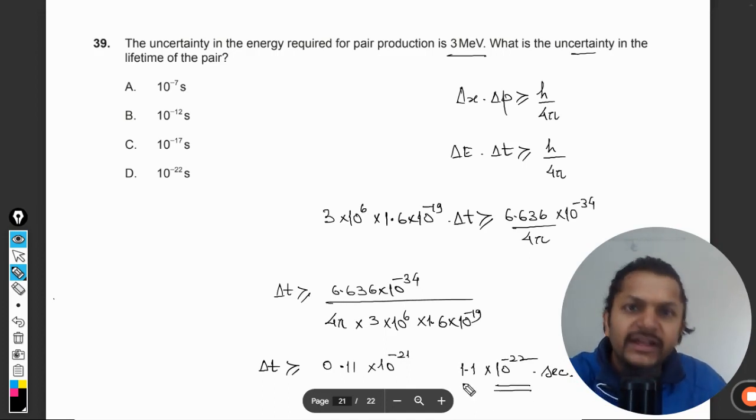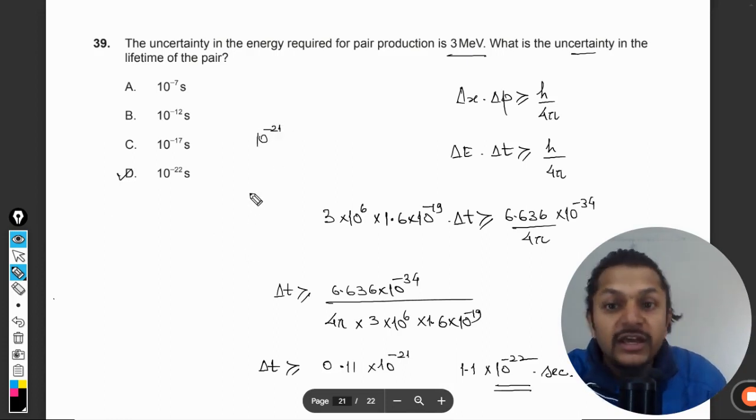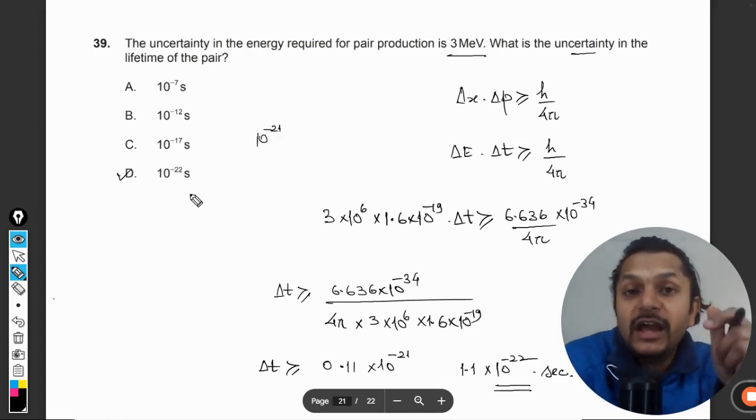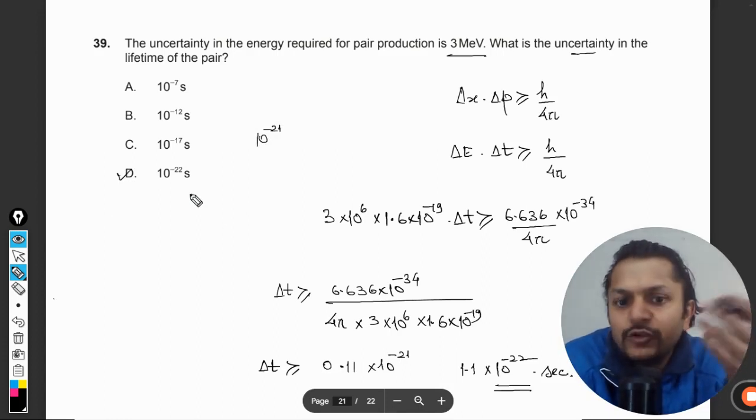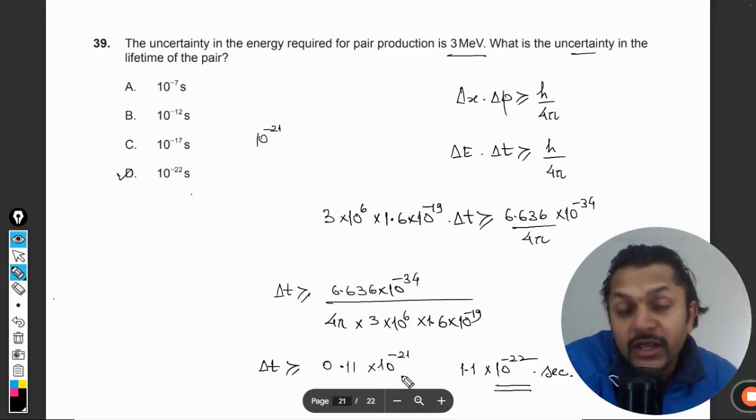Hence the answer will be D. If the option was given as 10^-21, even then the answer will be D. There is this possibility that you would be going with 10^-21 by mistake, but that will be wrong. 10^-22 will be the correct answer.